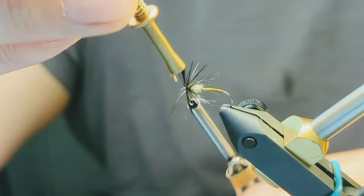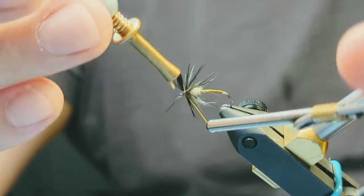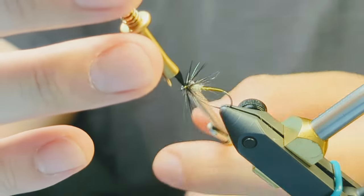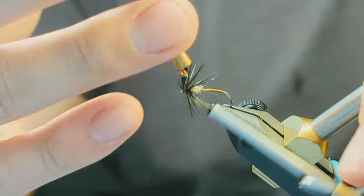About three or four wraps for the collar is usually enough. When you're happy with it, take a few thread wraps around the waist end of the starling feather.